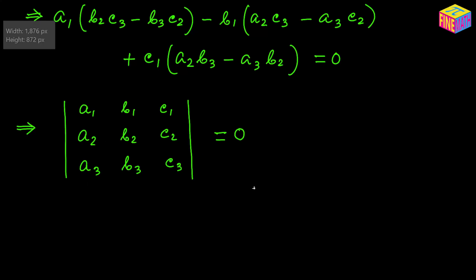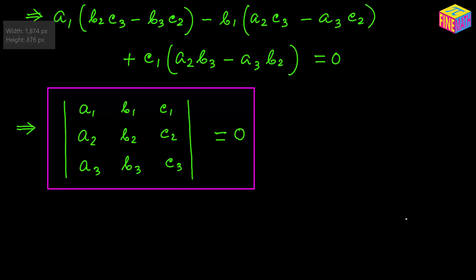The three lines will be concurrent if this determinant's value equals 0. I hope everything made sense. Thank you for watching — see you in the next video.